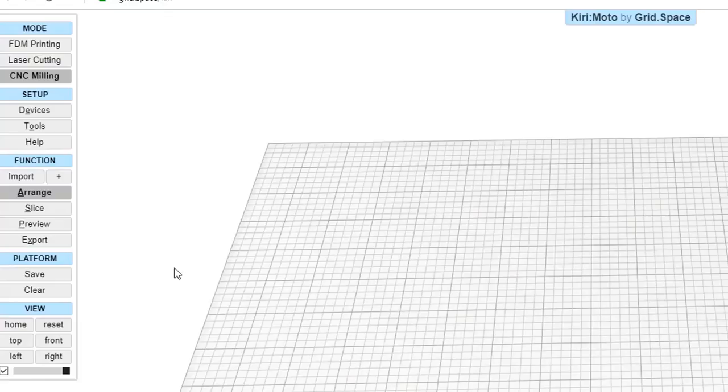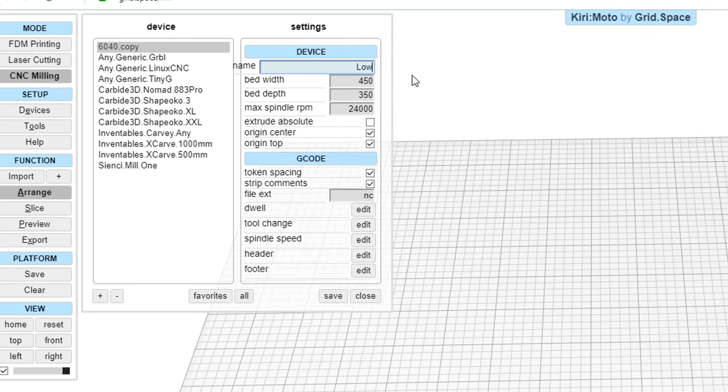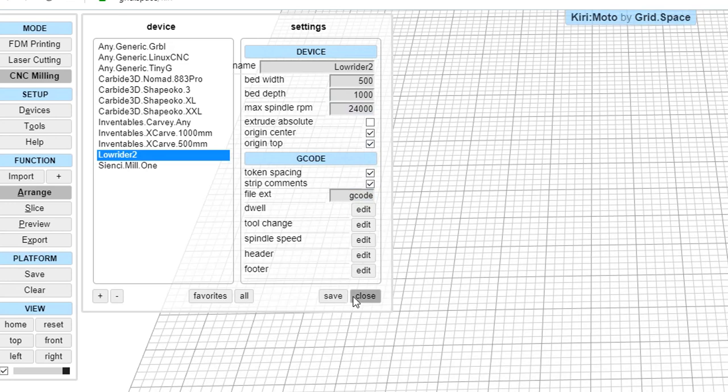Now we can go back and look at generating the gcode. Over in Kirimoto we want to do some one off setup work by setting up our machine. With the mode on CNC milling we want to click devices plus and then name our machine. I measured my bed width to be an excellent 500mm and my depth to be an even better 1000mm or 1m. Beyond that we want origin centre and top ticked. Everything else can say as you see it on the screen and our file extension is going to be gcode for our Marlin firmware.